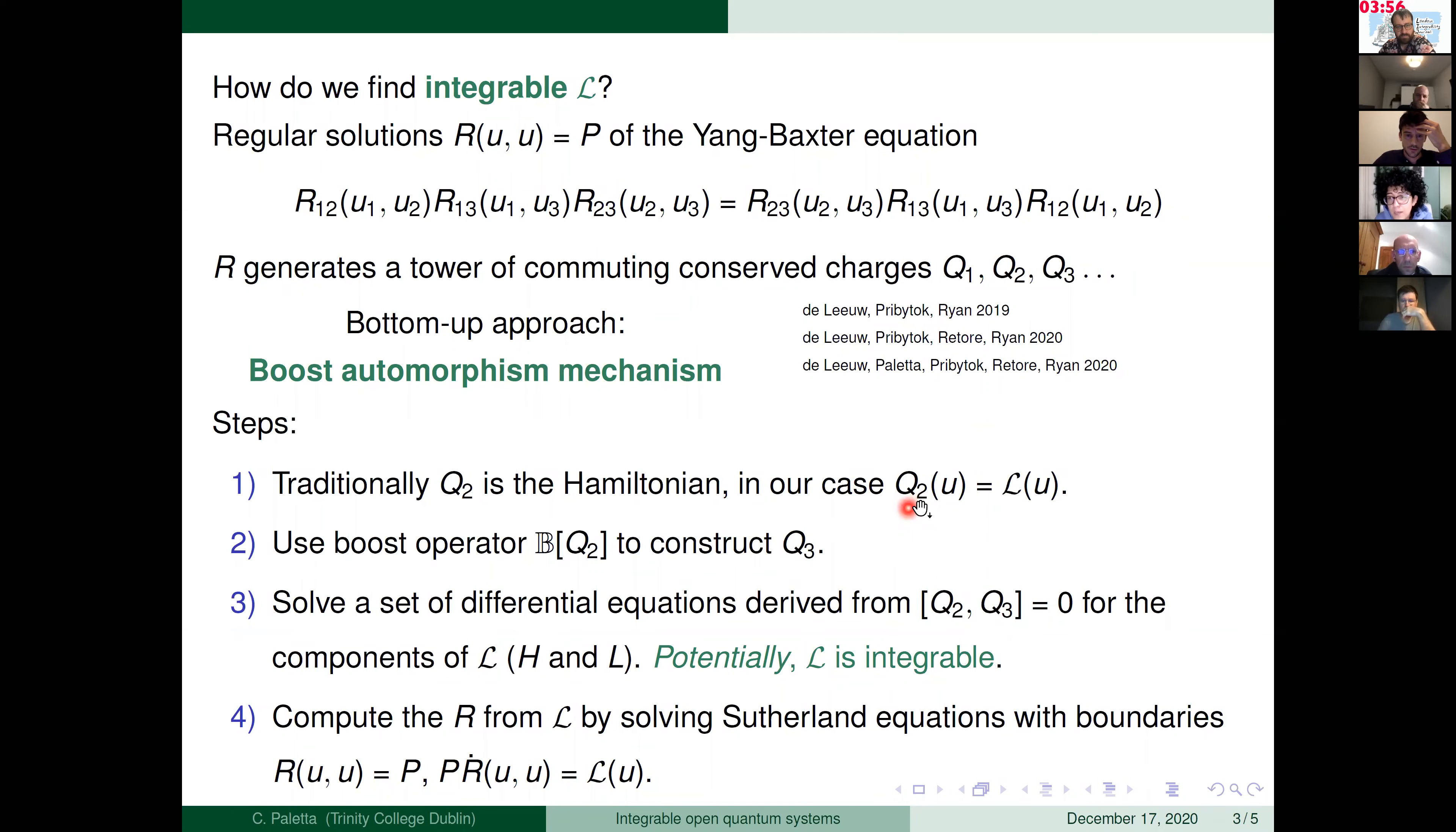And we can do that because since these charges can be constructed from the R matrix, the index here indicates on how many sites the conservative charges act. So two means that it can act on two sites. So the Hamiltonian can be a nearest neighbor Hamiltonian. So after... Yeah, can you remind like what is B in this case?